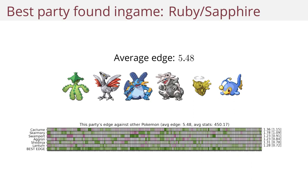Finally, the best party found in the third generation, Ruby/Sapphire, is this party. It has an average edge of 5.48, which is a huge value. And you can see that no matter what Pokemon this party meets, you can switch to a Pokemon which has a huge advantage.